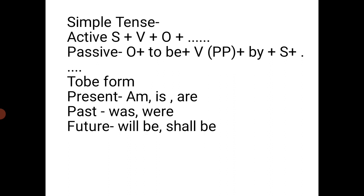We will see active to passive in four types of examples. The first type is simple tense — that is simple present, simple past, and simple future active to passive. The sentence structure for simple tense is: Subject + Verb + Object.